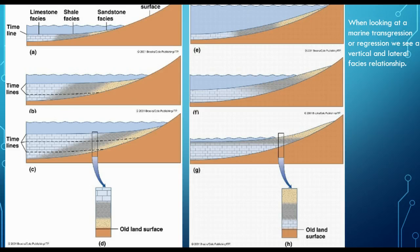Looking at the regression, we see the same thing. We start with deep water. That water begins to recede or move out, and we start to see the beach moving further out as we come along. We still see that vertical and lateral facies. In this case, we see the sandstone to the shale to the limestone. Looking at a cross section, again, we still see the sandstone to the shale to the limestone.